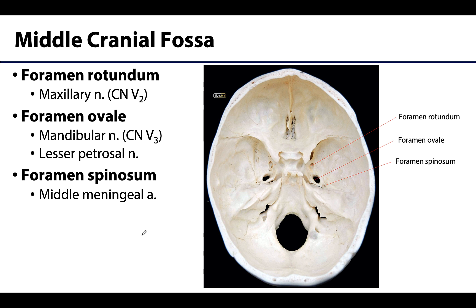Continuing with the middle cranial fossa, there are three more foramina to know. The foramen rotundum is where V2, the maxillary nerve, will exit the skull. The foramen ovale, which is more oval-shaped and larger, allows the exit of the mandibular nerve, the third division of the trigeminal nerve, which is the largest division — hence a larger foramen than the foramen rotundum. Lastly, the foramen spinosum, a small pinprick of a foramen posterolateral to the foramen ovale, allows the middle meningeal artery to ascend into the skull to supply the meningeal regions.